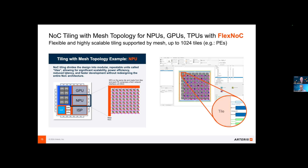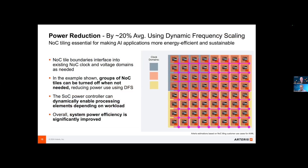Anything that requires object recognition or any image processing task that needs really snappy response times — this will apply. By snappy response times, this could be two cars going at 60 miles an hour in opposite directions and you need to react that fast. You need very quick reaction time for vehicles. Similarly, if somebody steps out from the pavement in front of a vehicle, it just needs to react as quickly as physically possible. So we measure almost everything by PPA — power, performance, area, cost. What sort of improvements do you get out of this approach?